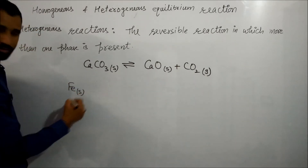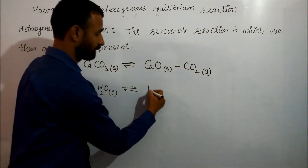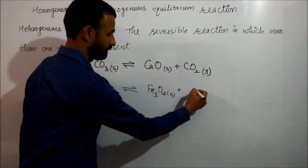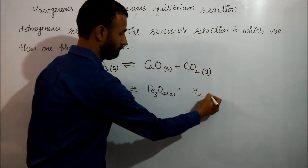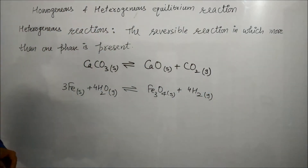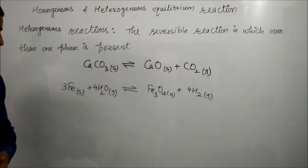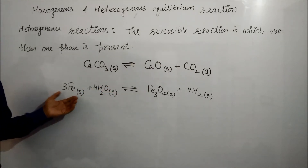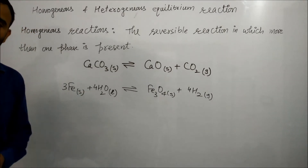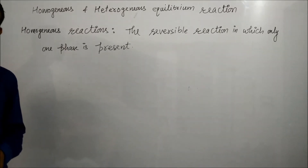Another example of heterogeneous equilibrium: when steam is passed through iron, we get Fe₃O₄ (solid) plus H₂ (gas). Here iron is solid and H₂O is gas, so this is another example of heterogeneous equilibrium.